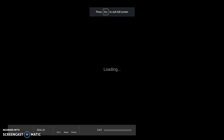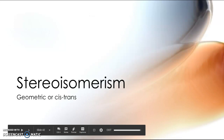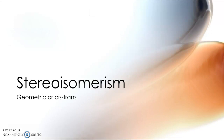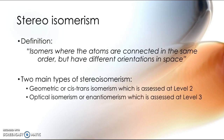Hi everybody and welcome to today's video. Today I'm going to be talking about a new type of isomerism known as geometric or cis-trans isomerism. In my previous video I spoke about structural isomers, which have the same molecular formula but different structural formulae. Stereoisomers are somewhat different because they have the same structural formulae but the atoms have different orientations in space.